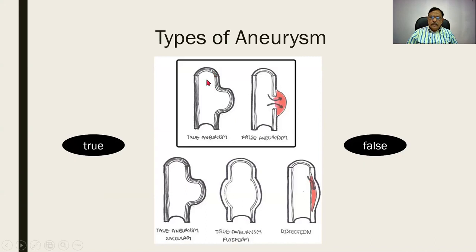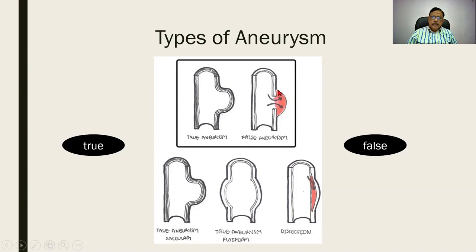A true aneurysm is one in which the sac-like distension is in communication with the lumen — the distension communicates with the lumen. This is called a true aneurysm. On the contrary, in a false aneurysm there is no distension of the lumen, but there is a collection of blood in the perivascular space producing a distension. This is called a false aneurysm.